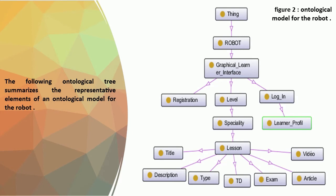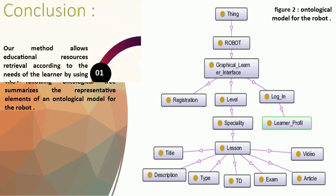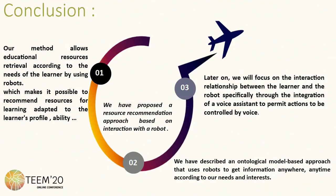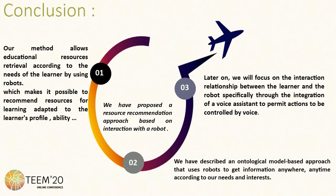The graphical learner interface forms a knowledge portal and extension tool to recommend resources as needed, and includes several components such as registration and learner level. To summarize, we have proposed a resource recommendation approach based on interaction with the robot, which allows educational resource retrieval according to the needs of the learner anywhere, anytime. Later on, we will focus on the interaction relationship between the learner and the robot, specifically through the integration of a voice assistant to permit actions to be controlled by voice. Thank you for your attention.